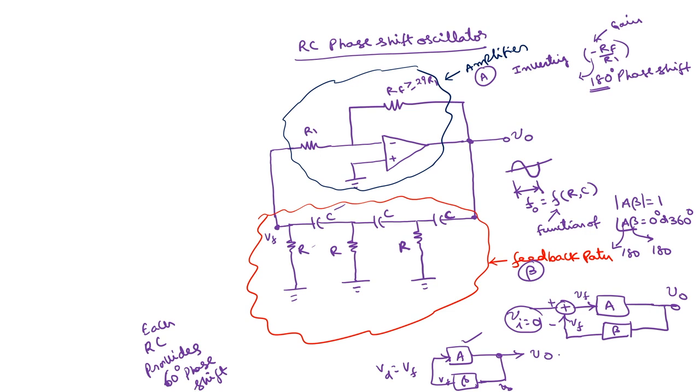This is how we can design the RC phase shift oscillator. The second type of RC oscillator is called the Wien bridge oscillator, which we will discuss in the next lecture.